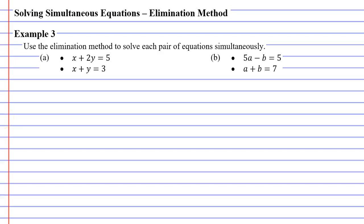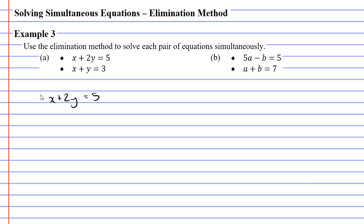In this video we're going to complete example 3, solving the following equations simultaneously using the elimination method. Let's go straight into question A. We've got two equations and we're going to write them one above the other: x plus 2y equals 5, and x plus y equals 3.